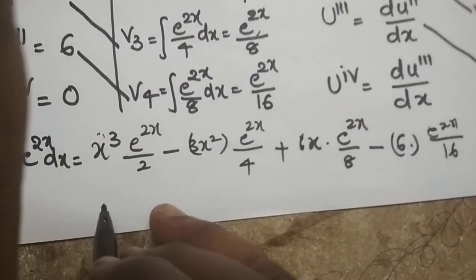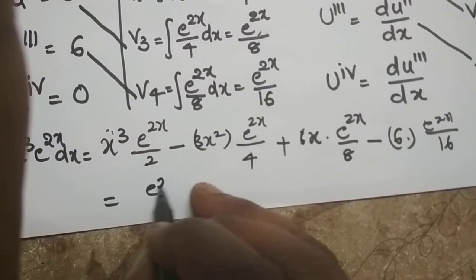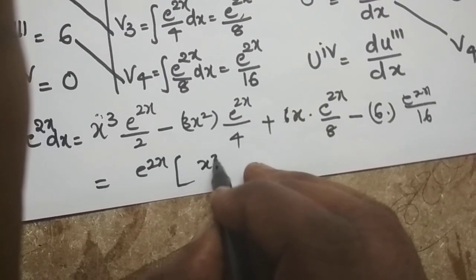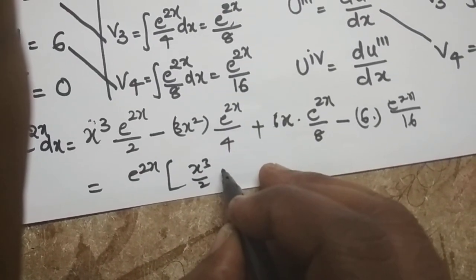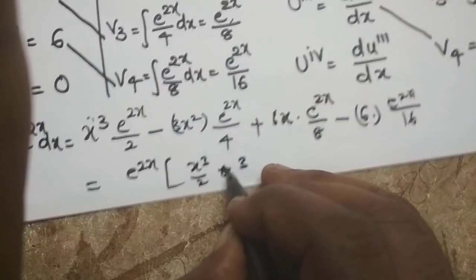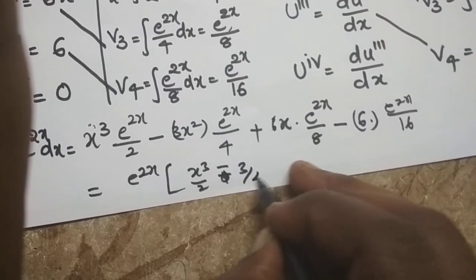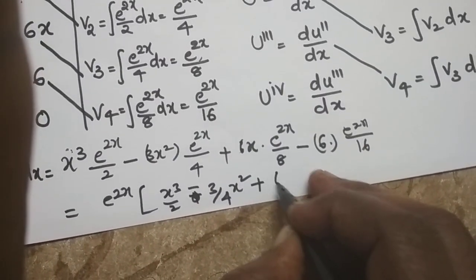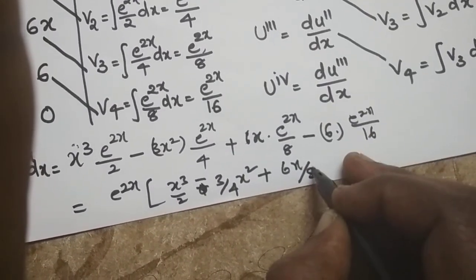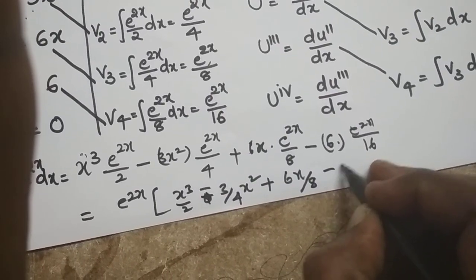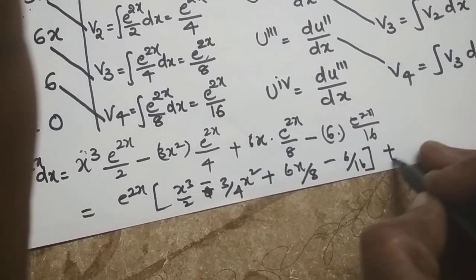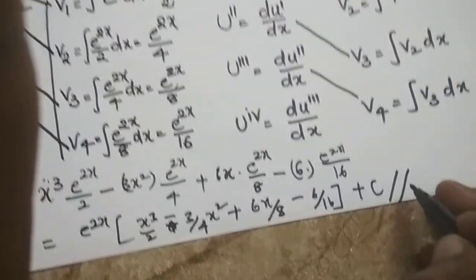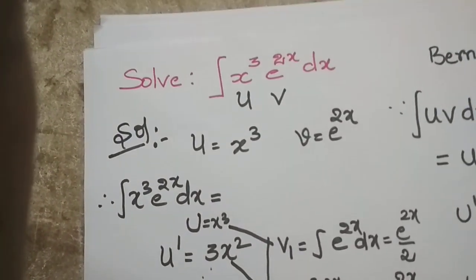Since e^(2x) is common to every term, we factor it out. The final answer is e^(2x) times the quantity: x cubed over 2, minus 3x squared over 4, plus 6x over 8, minus 6 over 16, plus a constant of integration. This is the final answer for the integral of x cubed times e^(2x) dx.